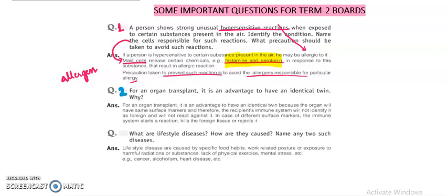We will move on to next question. For an organ transplant, it is an advantage to have an identical twin. Identical twins are the ones which are monozygotic, means they develop from a single zygote. That simple one zygote which is unicellular, when it undergoes division, it forms two cells and these two cells initially give rise to separate embryos.